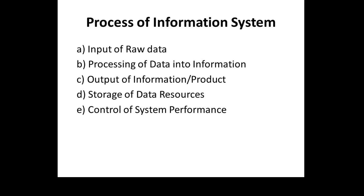The important content while processing the business information system includes: input of raw data, processing of data into information, output of the information or product, storage of data resources, and controlling of the system performance, processing of data and maintenance. People at an enterprise run the process which requires these data. The three important elements are input, process, and output.